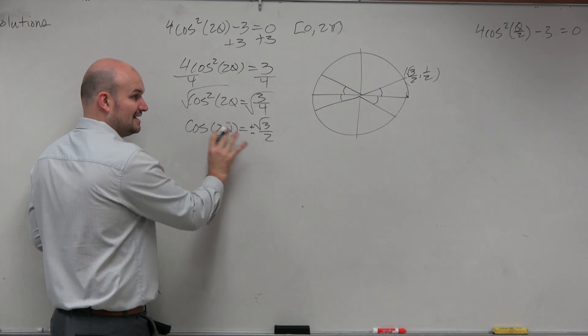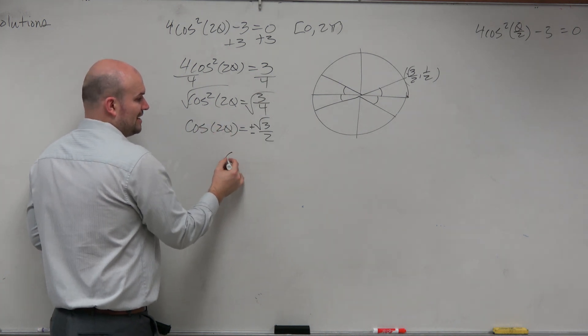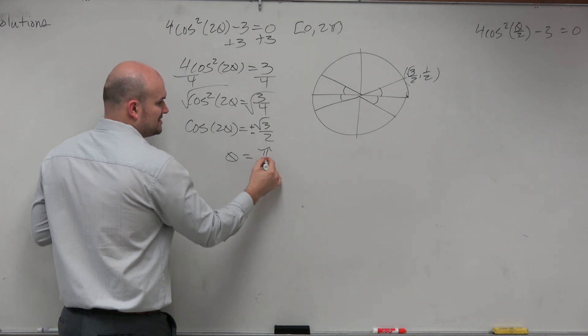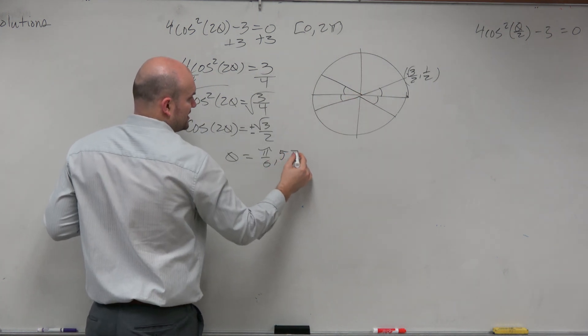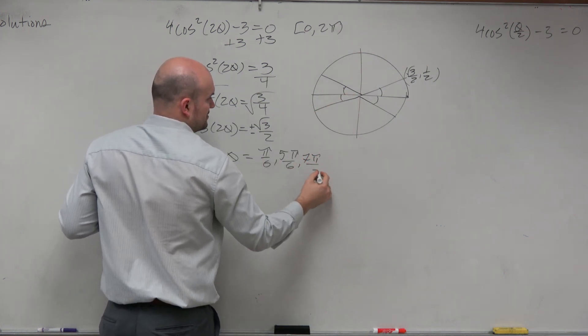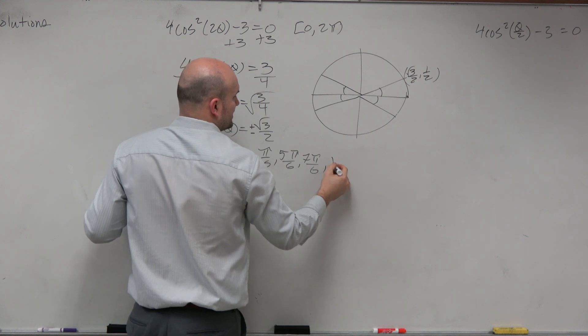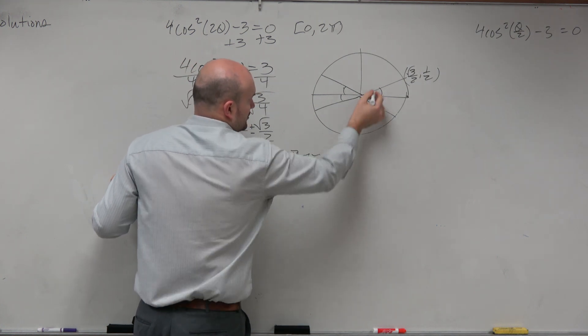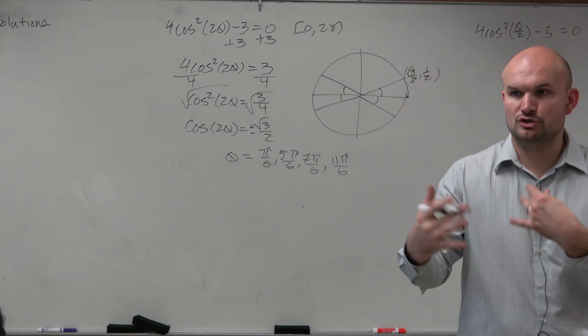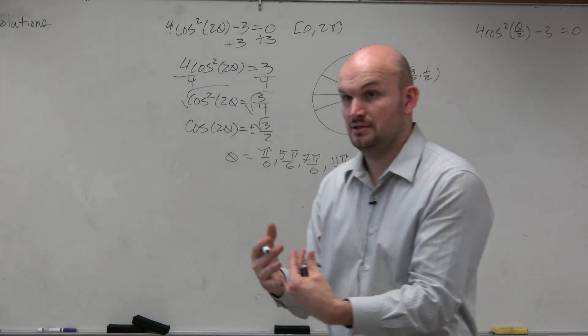All right. So basically here, we have theta equals, our answers from our last example are pi over 6, which is this answer, 5 pi over 6, which is that answer, 7 pi over 6, which is this answer, and 11 pi over 6, which is that answer. Is everybody good with this? Again, I haven't taught anything. I'm just regurgitating what we've already done.